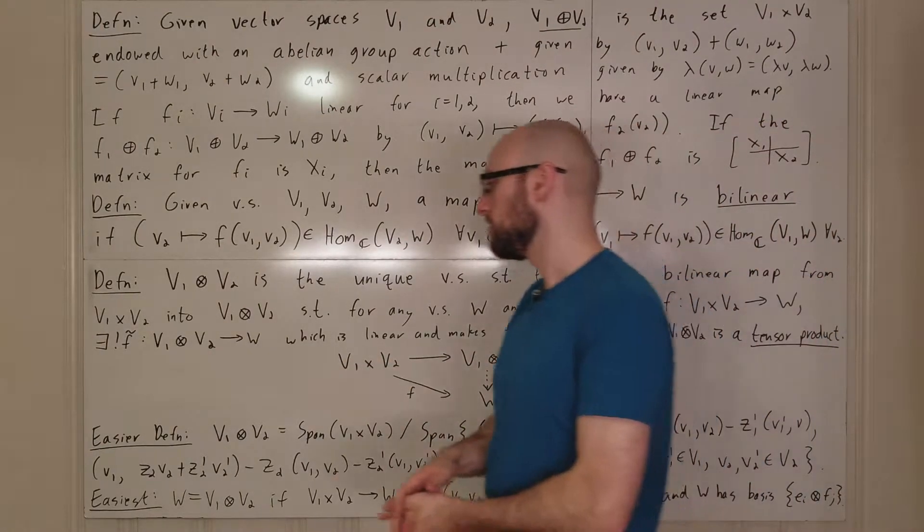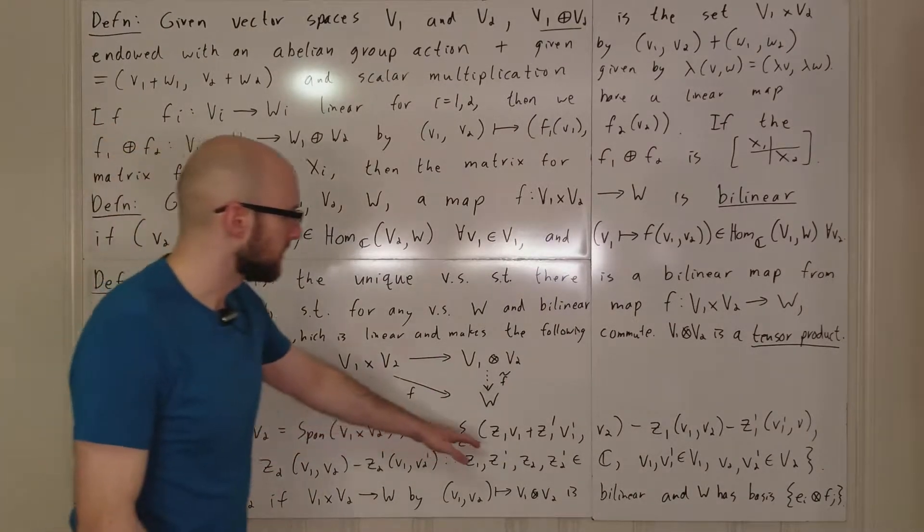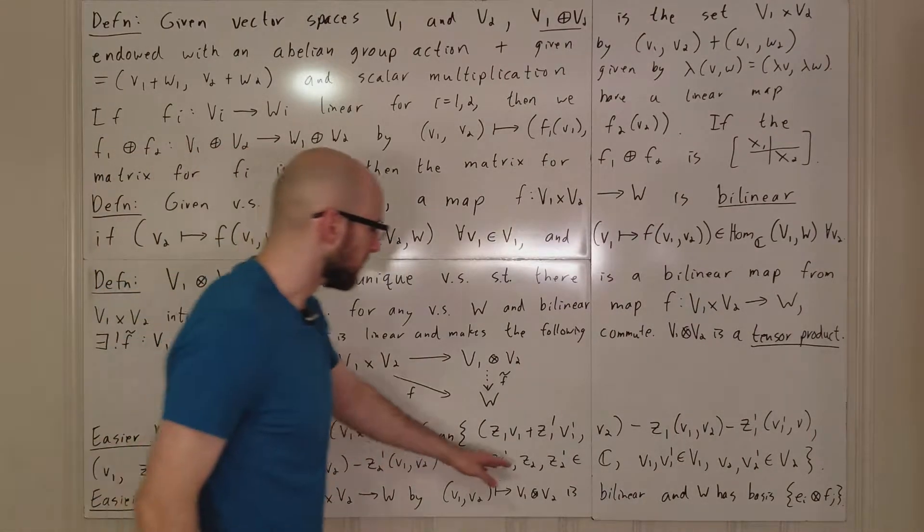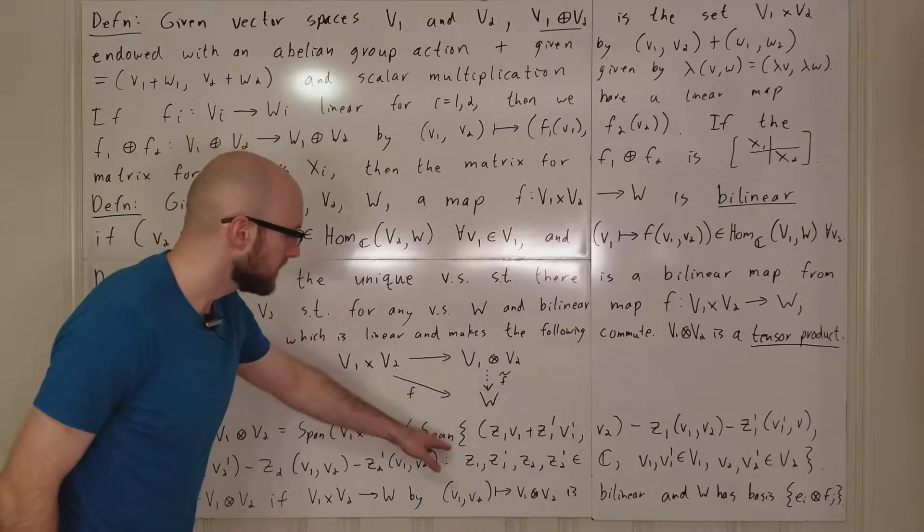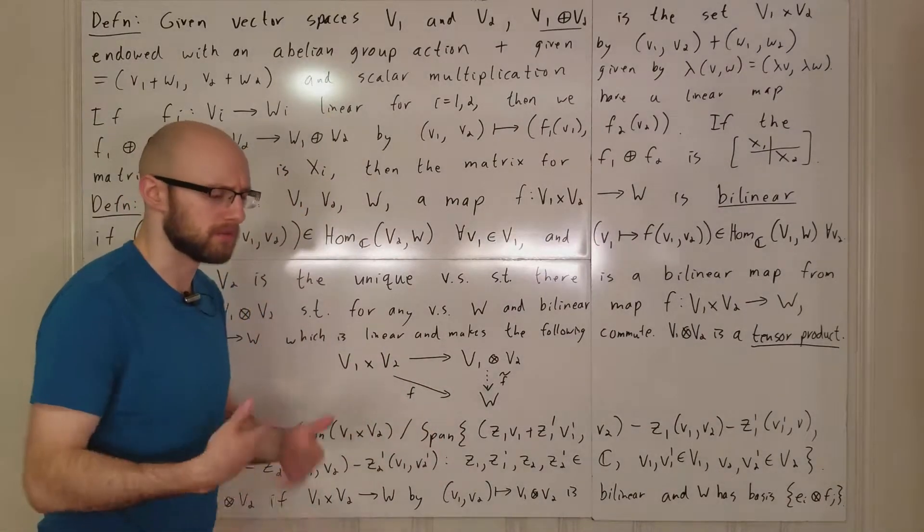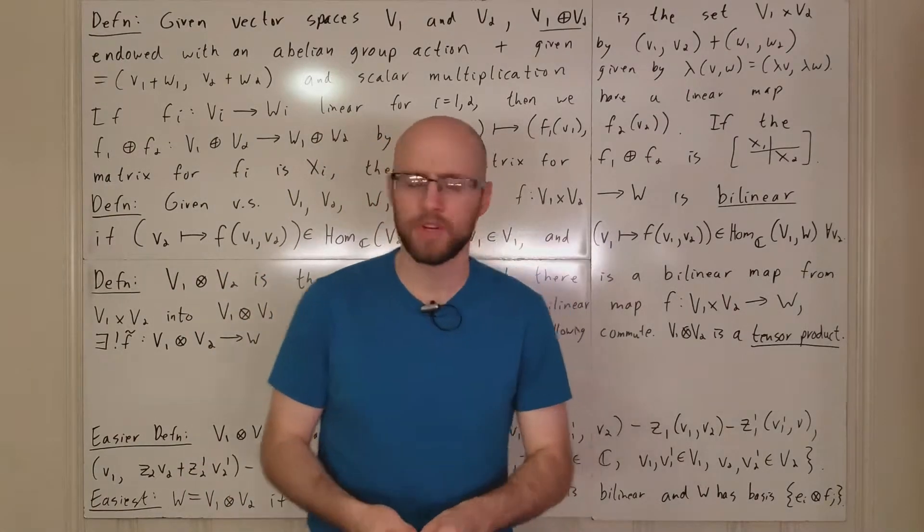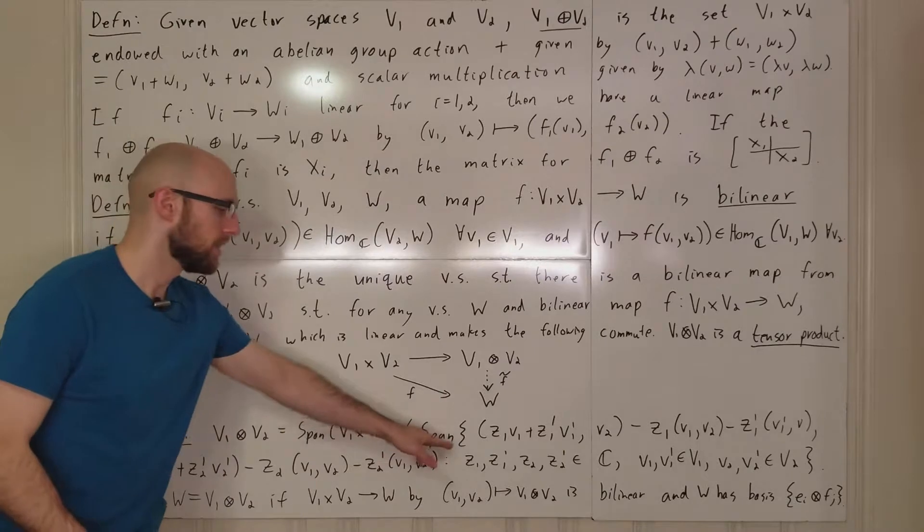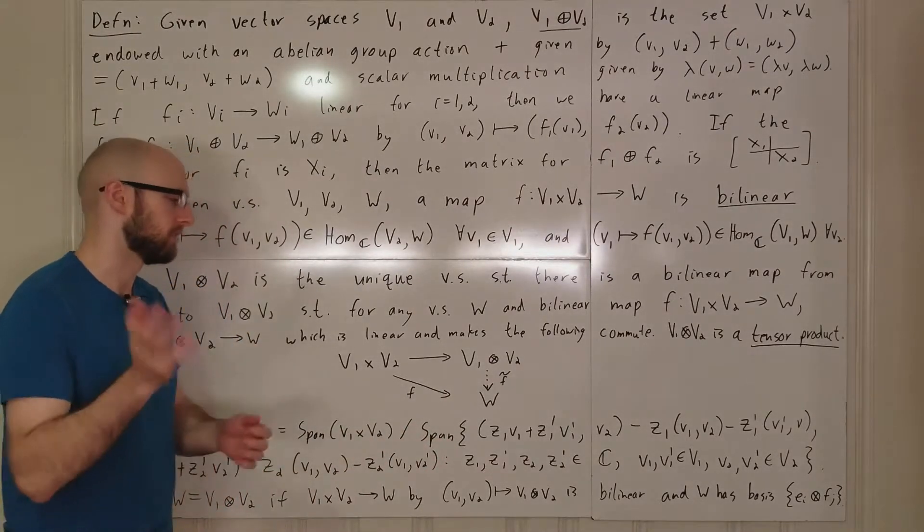And then you quotient by the span of this space. Since I'm writing all of this stuff down here, I'm not sure if I need to write span here. That might be a little repetitious. But basically what this does is this ensures bilinearity.